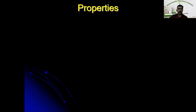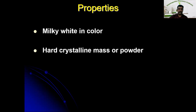Now let us see the properties of lactose that enable it to be used as a homeopathic vehicle. It is milky white in color, similar to milk. It is a hard crystalline mass or powder, and because of this crystalline property, lactose is the most preferred solid vehicle for preparation of medicine, especially in the trituration of homeopathic medicines, as trituration is more effective with crystalline substances.